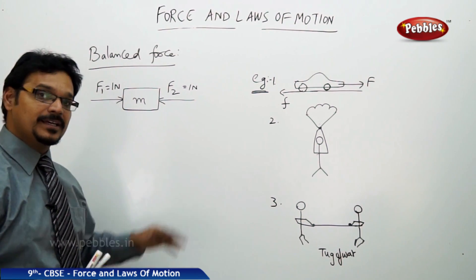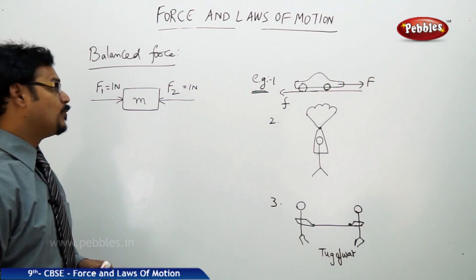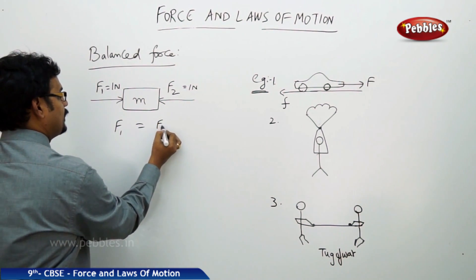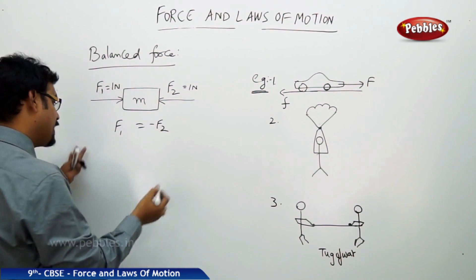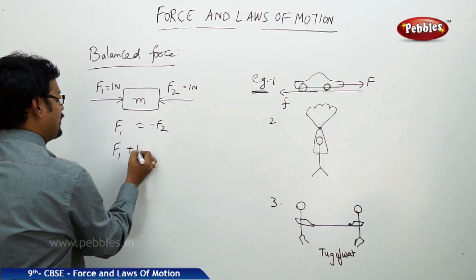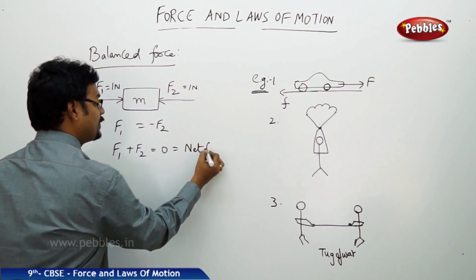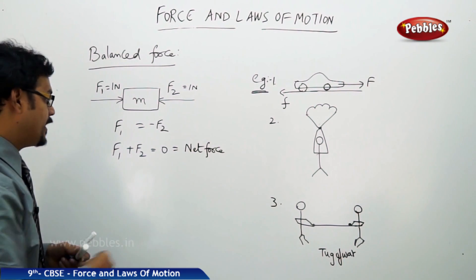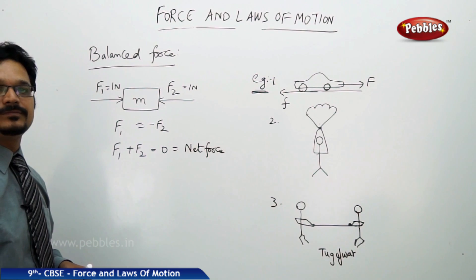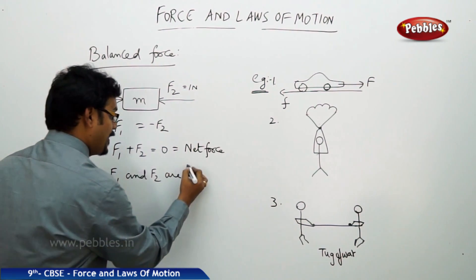And in this condition, the block is either at rest or it is in uniform motion. Because when these two forces are acting on the block which are equal, which are equal but opposite, you take the total forces acting on the body - F1 minus F2 - the total force is equal to zero. And this is called net force. Net force acting on the body or the block is zero. Then F1 and F2 are called balanced forces.